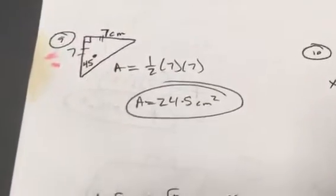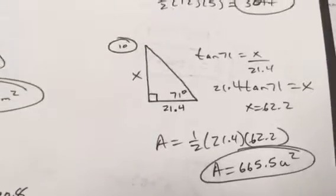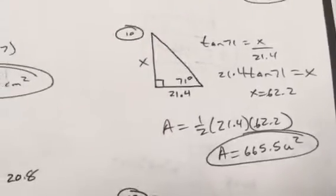45-45-90 triangle here on 9. 10, you've got to do some trig to figure out what x is. That is the height. You've got the area right there.